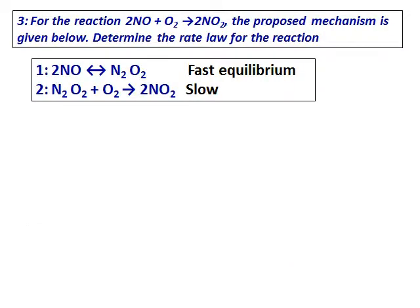One more similar question. The reaction is 2NO + O₂ → 2NO₂, and the proposed mechanism is also given. You have to find the rate law. The proposed mechanism is: 2NO → N₂O₂ (fast equilibrium step), and N₂O₂ + O₂ → 2NO₂ (slow step).